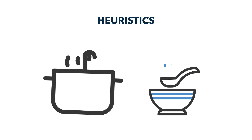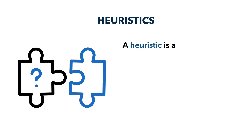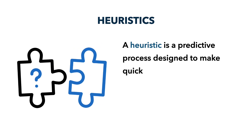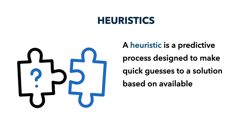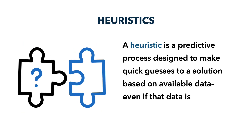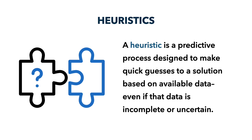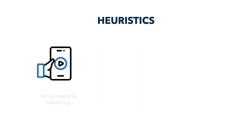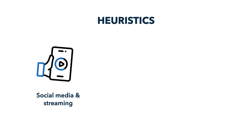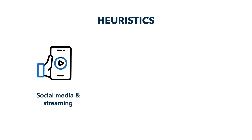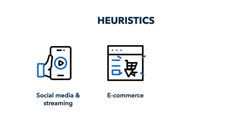You simply have to trust your instincts and hope that the final result is just as satisfying. Heuristics work in a similar way. A heuristic is a predictive process designed to make quick guesses to a solution based on available data, even if that data is incomplete or uncertain. Heuristics are often what people mean when they refer to 'the algorithm.' Social media and streaming platforms like Spotify, TikTok, Netflix, and Instagram use heuristics to recommend tailored content to their users. Similarly, e-commerce platforms like Amazon use heuristics to recommend products based on users' browsing and purchase behaviors.